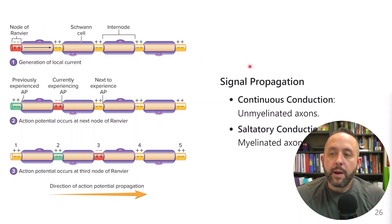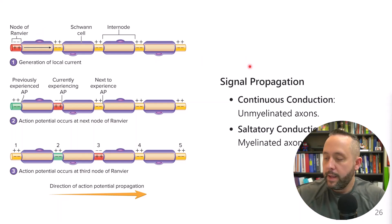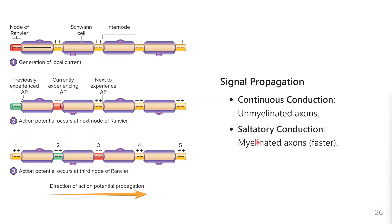Signal propagation can happen faster — for example from your toe to your spinal cord if you're stepping on something hot or sharp. That's what we see in a myelinated axon, and we call it saltatory conduction because saltatory means to jump. The myelin sheath and the nodes of Ranvier allow the signal to jump along and propagate faster. We've already been learning about continuous conduction down a normal everyday axon through the muscle chapters.